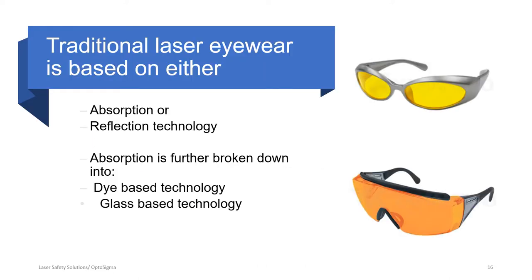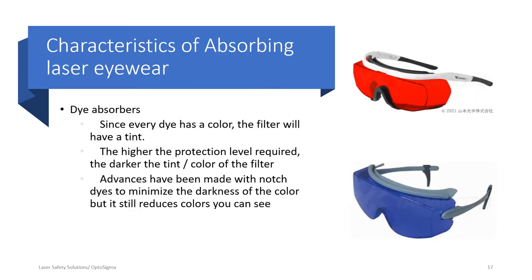Traditional laser eyewear is either an absorptive type of filter or reflective technology. If absorptive, it is either dye-based or glass. For plastic, absorbing material or acrylic — basically the darker the filter, usually the greater the dye concentration. Eyewear manufacturers are constantly looking for dyes that give a high level of protection and good visibility, so things have been getting better and better over the years.